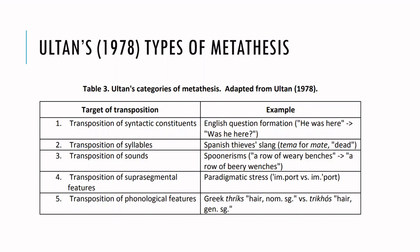Number four, the transposition of suprasegmental features, for example tone or paradigmatic stress, as in import versus import. And five, transposition of phonological features — as when in Greek the feature of aspiration is moved, for example when thrix is contrasted with tricose. There the aspiration has moved from the coronal onset to the velar sound.